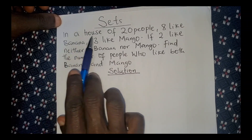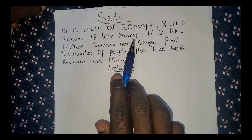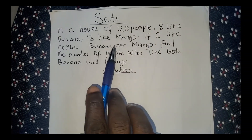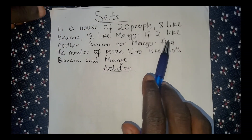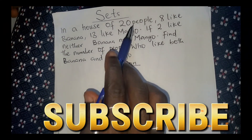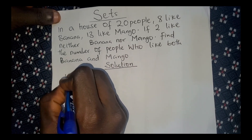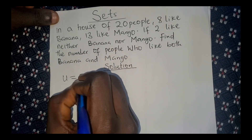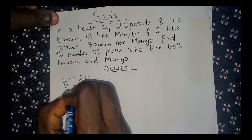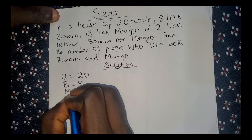In this set problem, we're told that in a house of 20 people, 8 like banana and 13 like mango. If two like neither banana nor mango — meaning two people don't like banana and don't like mango — find the number of people who like both banana and mango. So the total people are 20, that is our universe: U equals 20. For banana we have 8 people, and for mango we have 13 people.